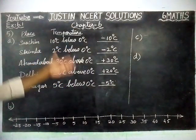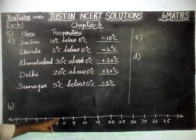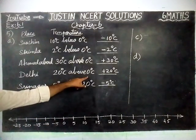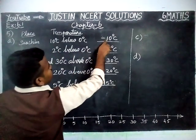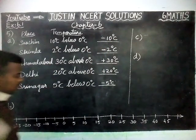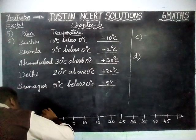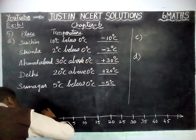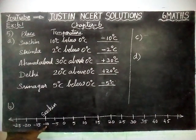And we have written all temperatures as integers. Part B question is: following is the number line representing the temperature in degree Celsius — plot the name of the city against its temperature. We have to mark these temperatures on the number line and write the city name. The first city, Siachin, is minus 10 degree Celsius. Minus 10 is here — that is Siachin, on minus 10 degree Celsius.